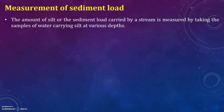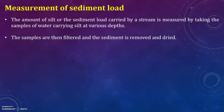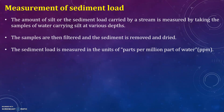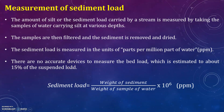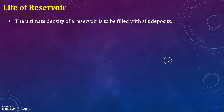The amount of silt or sediment load carried by a stream is measured by taking samples of water carrying silt at various depths. The samples are then filtered and the sediment is removed and dried. The sediment load is measured in units of parts per million (ppm). There are no accurate devices to measure the bed load, which is estimated at about 15 percent of the suspended load. Sediment load (ppm) = (Weight of sediment / Weight of sample of water) × 10^6.